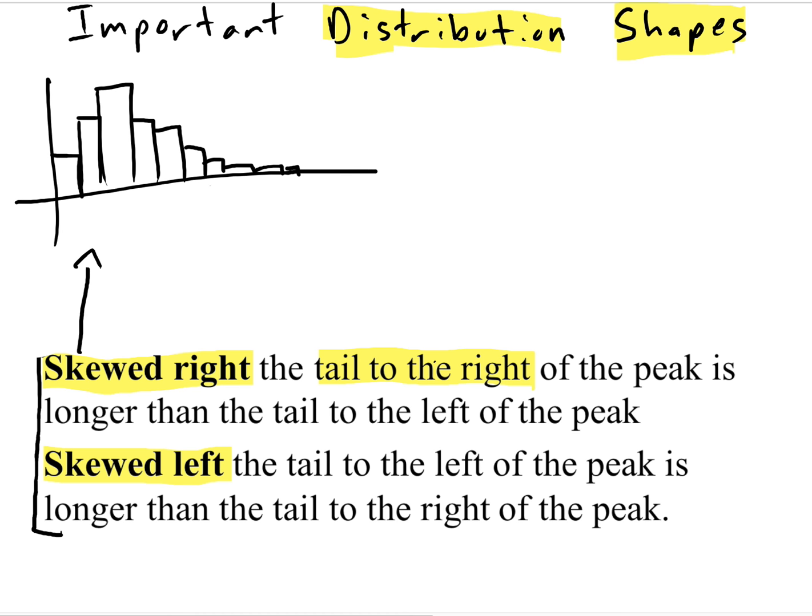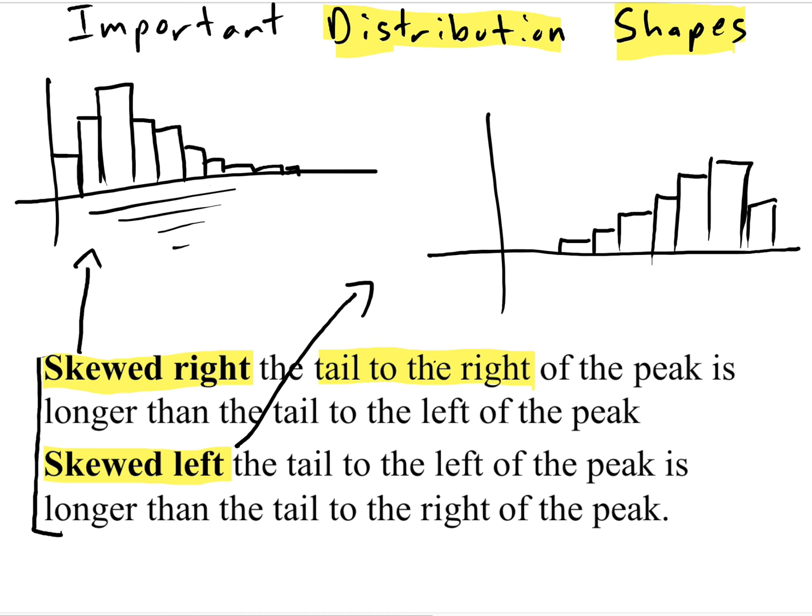A skewed-left distribution, instead of having the tail pointing to the right, is going to have a larger number of values on the right and it's going to trail off as it gets smaller. This is a skewed-left distribution. I remember where the tail's pointing. Skewed-left distributions are pointing to the left, and skewed-right distributions are pointing to the right.